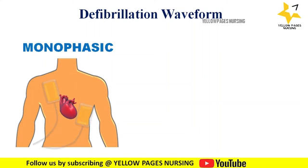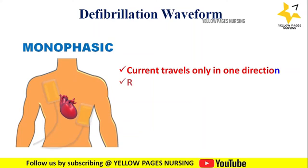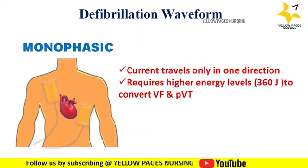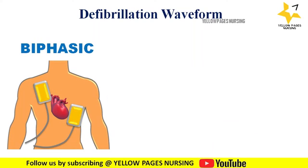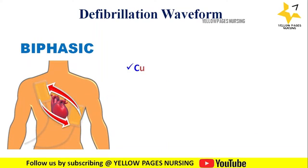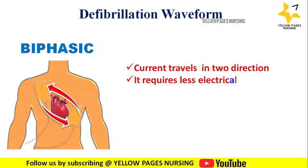Defibrillation waveforms: The first is monophasic, where current travels only in one direction and requires more energy — up to 360 joules — to convert ventricular fibrillation and pulseless ventricular tachycardia to normal sinus rhythm. The second is biphasic, where current travels in two directions, requiring less electrical energy.